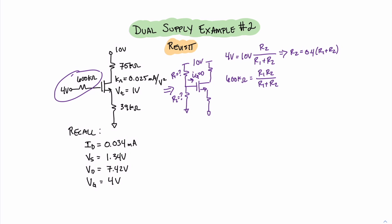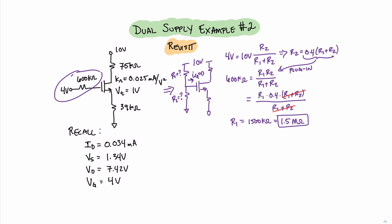Now, we can see that we have two equations and two unknowns: R1 and R2. We'll take the first equation and plug it into the second equation. Plugging that in gives us R1 times 0.4 times R1 plus R2 divided by R1 plus R2. However, we can see that we have R1 plus R2 on both the top and the bottom, and therefore we can cancel them. This leaves us with R1 equals 1500 kilohms, or 1.5 megaohms.